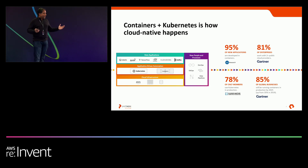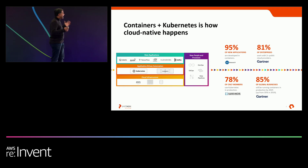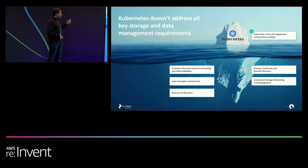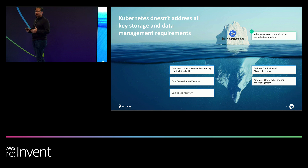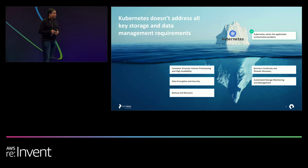Containers are now getting widely adopted. Most modern applications are written as microservices and containers, and the adoption rate is only growing. About 95% of new apps are being developed in containers, and a large portion of Global 2,000 enterprises are now building their apps with containers. What enables containers to run is a fundamental technology called Kubernetes — the container orchestration platform that lets you bring application microservices together and render an application running in your cloud environment.